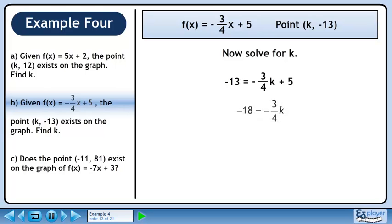Subtract 5 from both sides. The negatives cancel out, giving 18 = 3/4k. Cross multiply to get 72 = 3k. Divide both sides by 3 to get k = 24.